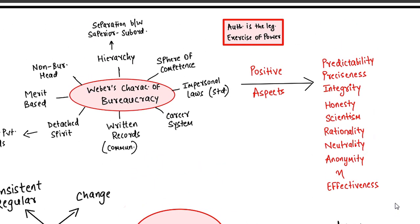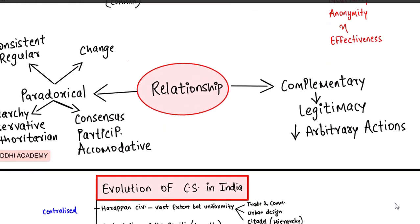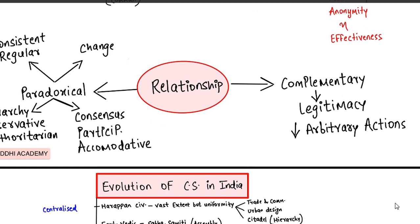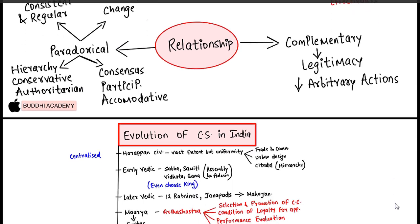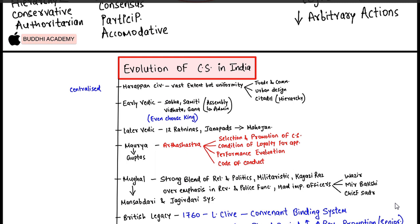Civil servants को merit basis पर बनाया जाता है ताकि वो rationality और scientificism develop कर सकें और arbitrary actions न लें। इसी के साथ इनको legitimate किया जाता है - proper appointment democratic process से होती है और accountability भी fix की जाती है क्योंकि हर bureaucrat के ऊपर political head होता है। इस तरह civil services democracy को rules and regulations follow करवाने में compliment करती है और policies को lawful तरीके से implement करवाने में legitimacy provide करती है। Next lecture में we will talk about the evolution of civil services in India।